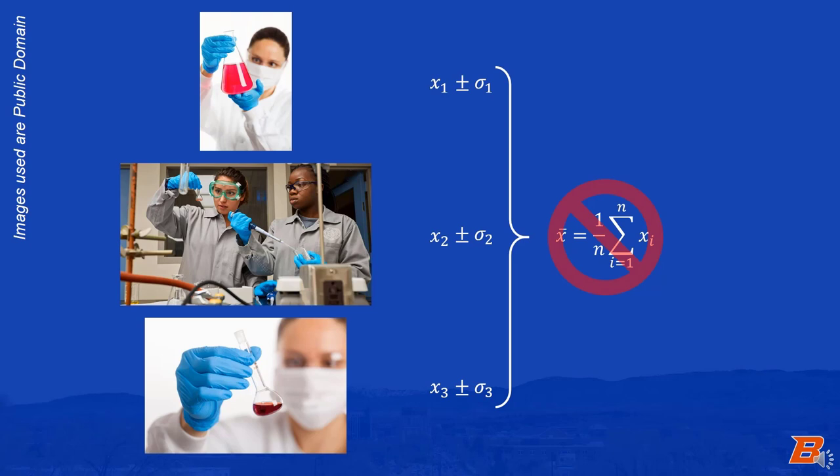The general idea is that we want the values that are more certain to be weighted more, and the values that are less certain to be weighted less. We can do that by assigning individual weights to each value that determines how much of a contribution it makes to the average.